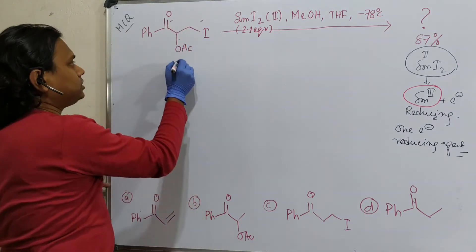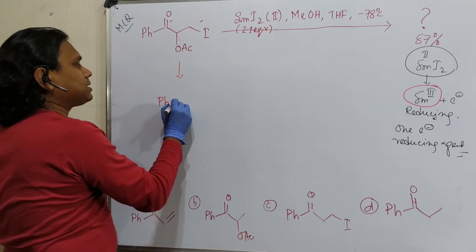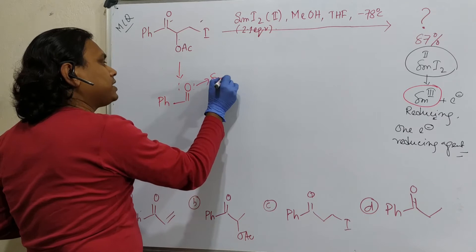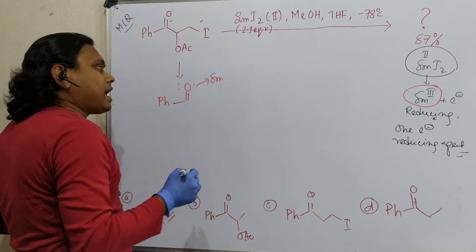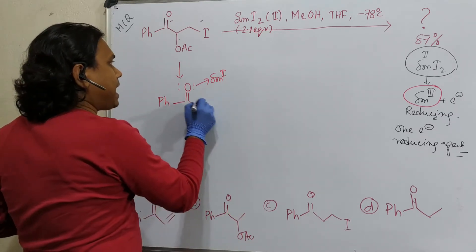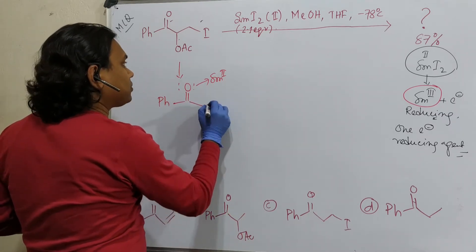So let me come slowly. In case of carbonyl, first samarium coordinates. So samarium two plus coordinates and after that it transfers the electron. And where does it transfer the electron?